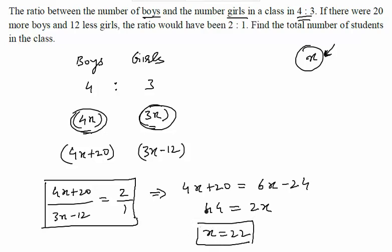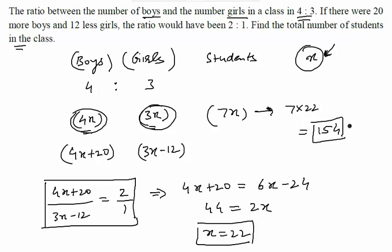Now we have the constant of proportionality with us. The question is find the total number of students in the class. So if boys are 4x and girls are 3x, then total number of students will become how much? They will become 7x. And if x is equal to 22, number of students will become 7 into 22, which is 154. This means that there are total 154 students in this particular class.